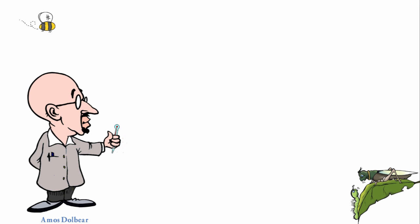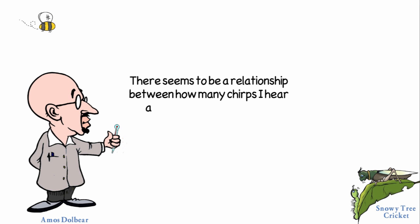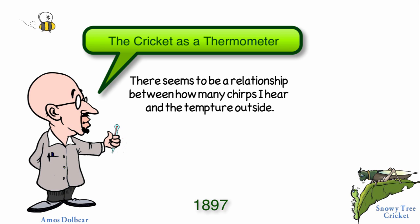Amos Daubert, a physics professor at Tufts College, noticed that the snowy tree cricket chirps faster when temperature rises and slower when temperatures fall. In 1897 he published his findings in an article called The Cricket as a Thermometer.